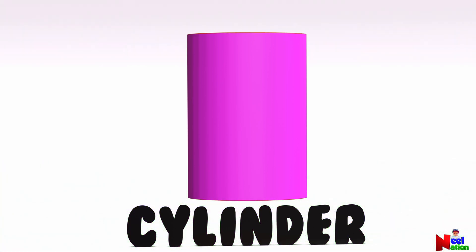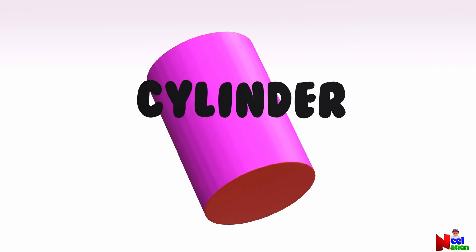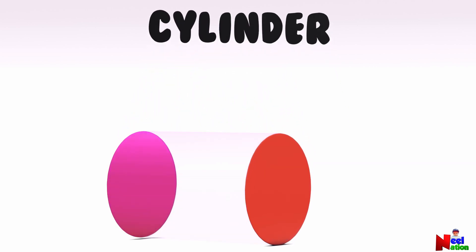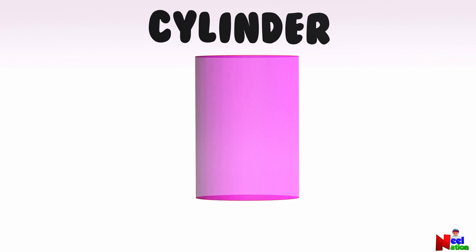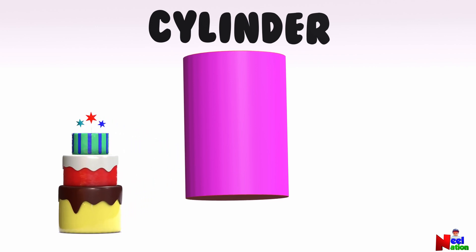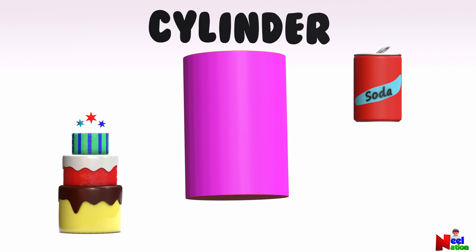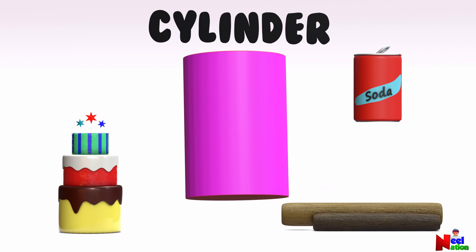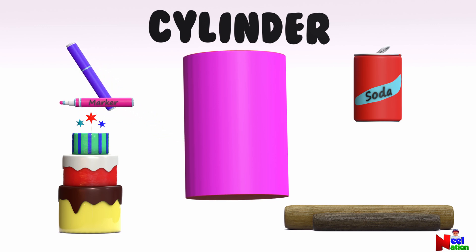A cylinder is a 3D shape that has two circular faces joined by a curved surface. Can you name some objects that resemble a cylinder? A cake — look at that cake, it looks like three cylinders one on top of another! A soda can, a log of wood, and markers are cylinders as well.